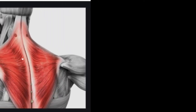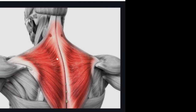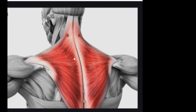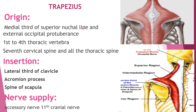Assalamu alaikum, welcome back to our YouTube channel MH Physiotherapist. Today's discussion topic is the trapezius muscle - its origin, insertion, nerve supply, and function. The trapezius is a triangular flat muscle of the shoulder girdle, as you can see, with three parts: upper, middle, and lower.